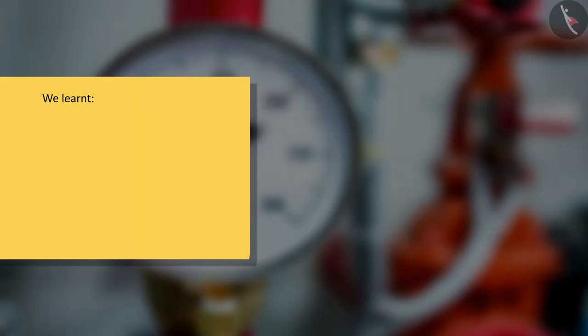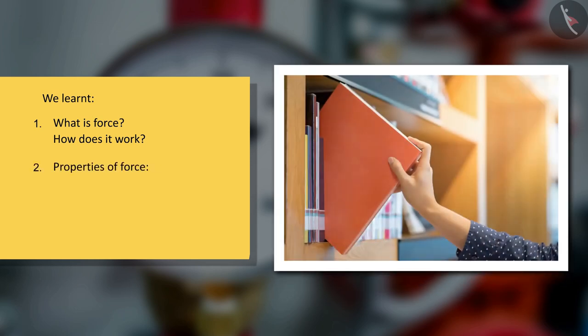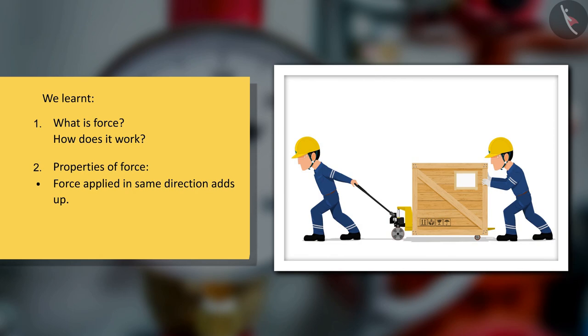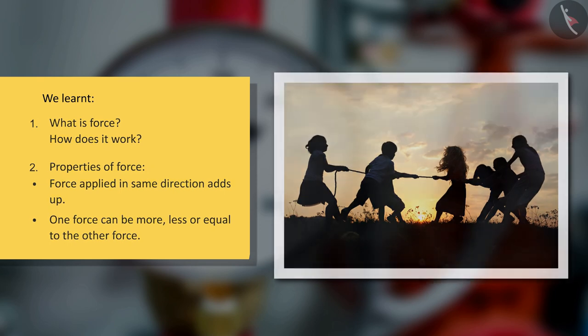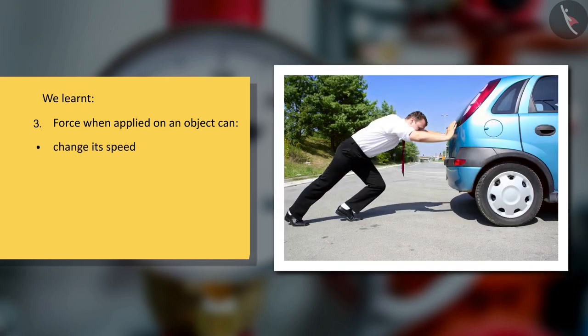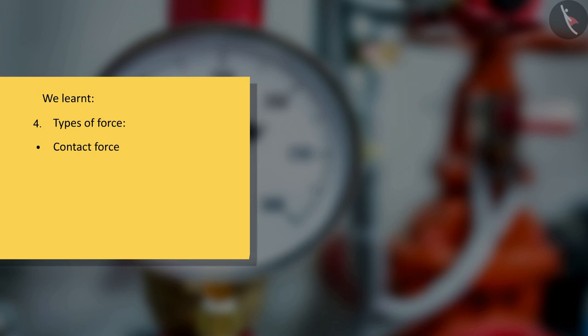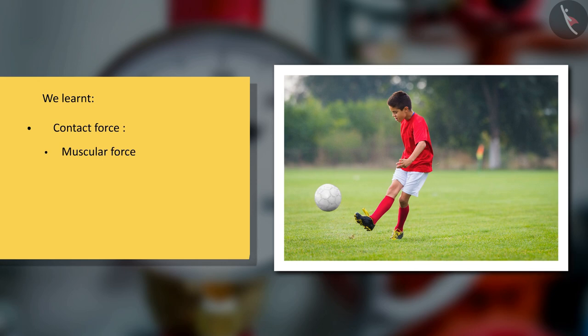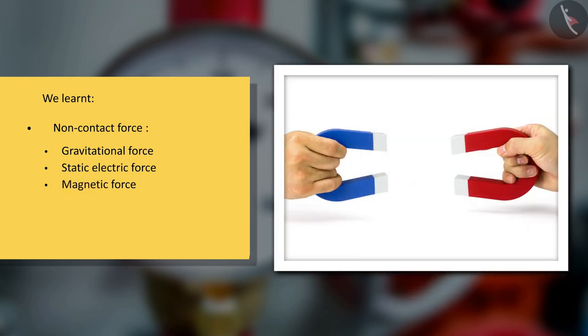We learned what is force and how does it work. Properties of force: force applied in the same direction adds up, and one force can be more, less, or equal to the other force. Force when applied on an object can change its speed, shape, or direction of motion. Types of force: contact force and non-contact force. Contact force includes muscular force and frictional force. Non-contact force includes gravitational force, static electric force, and magnetic force.